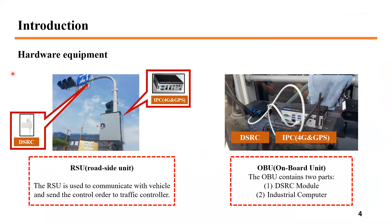Regarding the hardware equipment, the RSU is used to communicate with the vehicle and send control orders to the traffic controller. The OBU is used to provide bus data and GPS position to the RSU. Both the roadside hardware and the bus include an industrial computer and a DSRC module for communication.